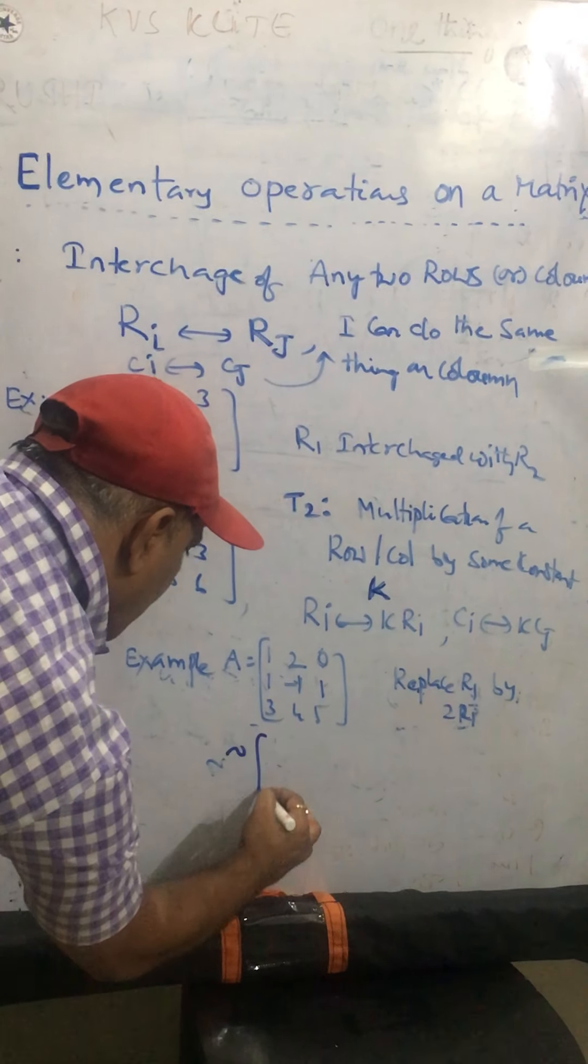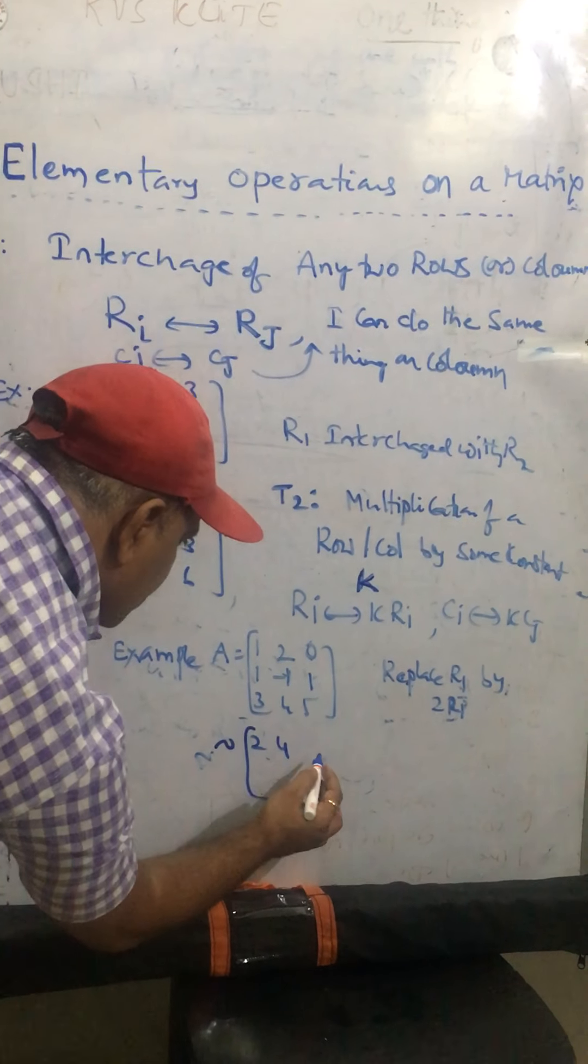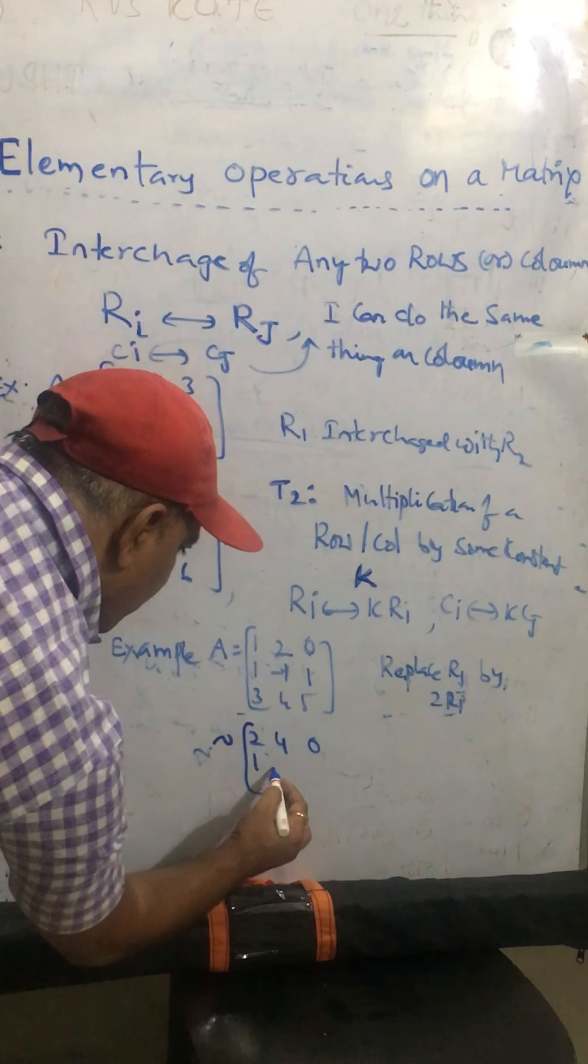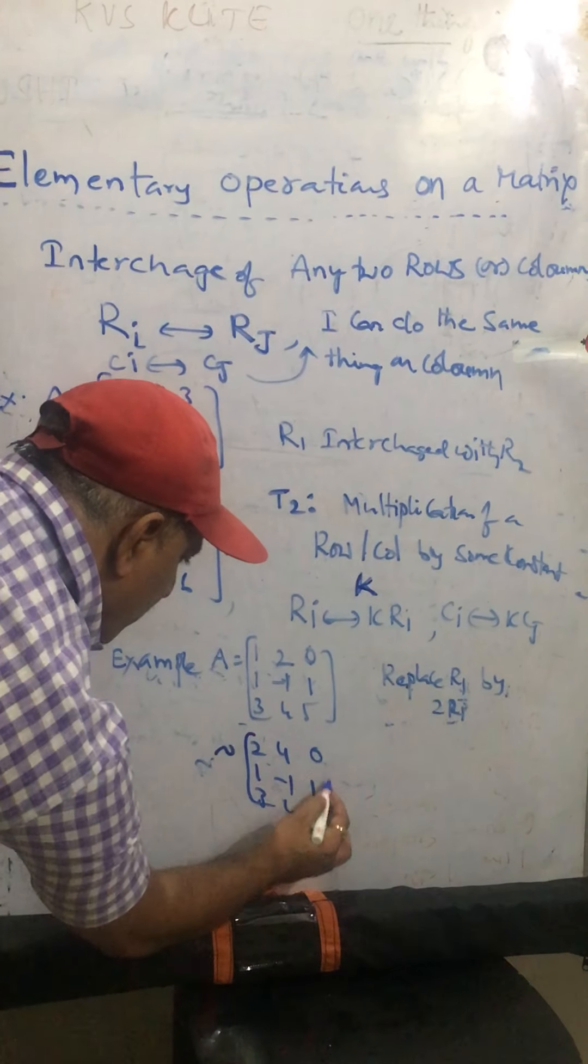So now, the new matrix of the form, this is 2, it becomes 4, it becomes 0, and 1, minus 1, 1, and 3, 4, 5.